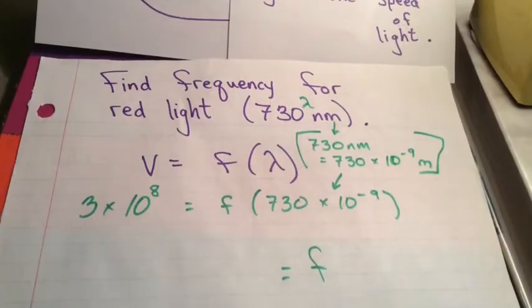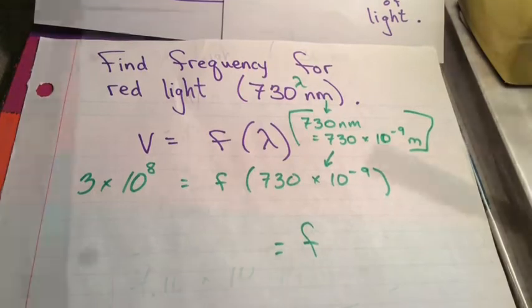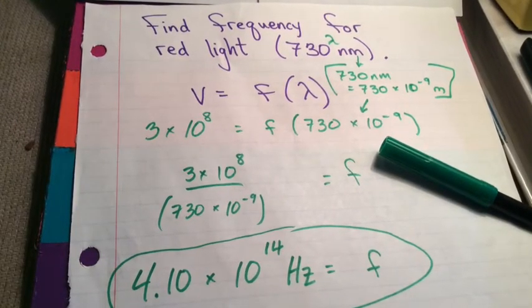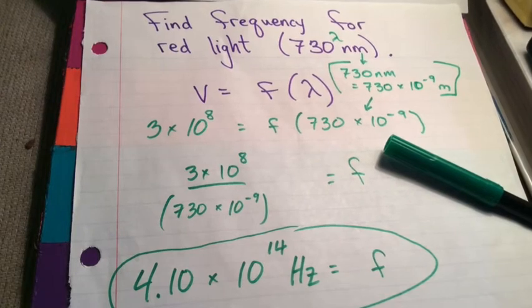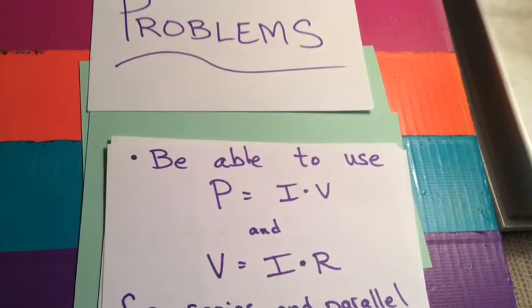So let's try red light. Red light with a wavelength of 730 times 10 to the negative 9th meters. Be sure you use parentheses on that bottom portion when you're dividing that through. So take your speed of light divided by your wavelength to get that frequency.